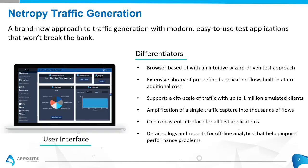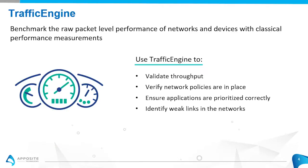Traffic engine is one of four features available in the Netropy Traffic Generator Solution. Traffic engine can be used for benchmarking raw data, such as validating throughput, verifying network policies are in place. For example, is your network behaving as expected? Are correct packets getting prioritized? We can do deep or complete packet inspections.